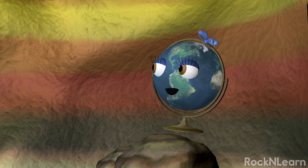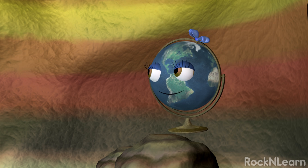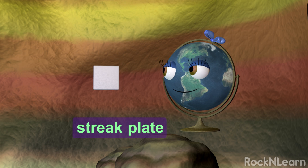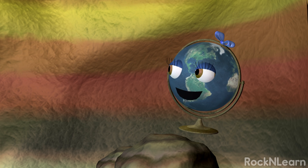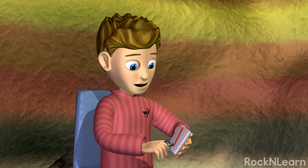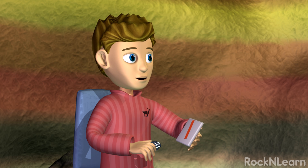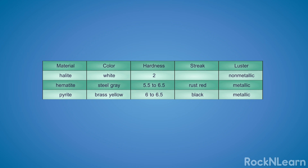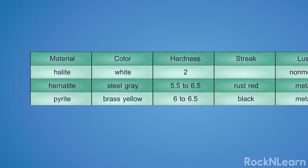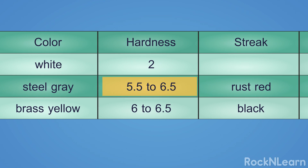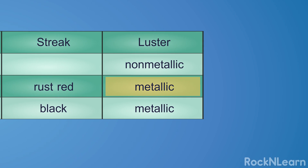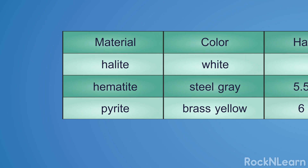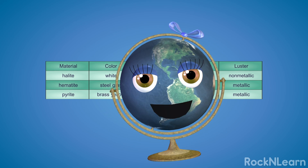The streak of a mineral is the color of the powder it leaves when you scrape it across a streak plate. We know your mineral has a hardness lower than seven, so... Red? That's not what I would have guessed at all. Don't feel too bad, kid — science is full of surprises. Have a look at this table here. Do any of those descriptions match your mineral? Steel gray, hardness 5.5 to 6.5, rust red streak, metallic luster — I'll bet this is hematite. That's the way to do it. Great job.